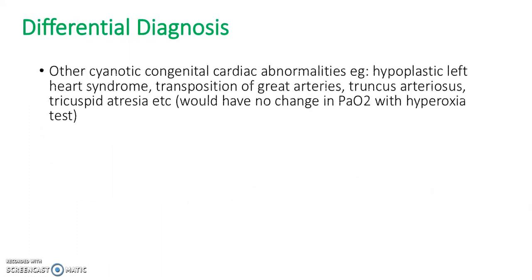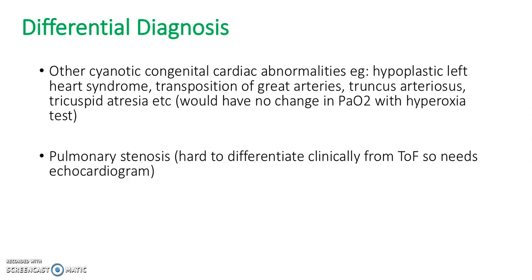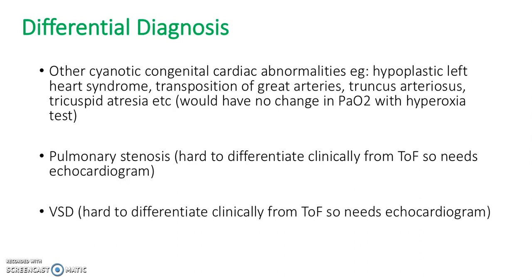Differential diagnosis. Other cyanotic congenital cardiac abnormalities — for example, hypoplastic left heart syndrome, transposition of the great arteries, truncus arteriosus, or tricuspid atresia — although they would have no change in PaO2 with the hyperoxia test. Pulmonary stenosis is hard to differentiate clinically from TOF, so it needs an echocardiogram. A VSD is also hard to differentiate clinically, so it also needs an echocardiogram. Primary pulmonary disease could also be a differential diagnosis.